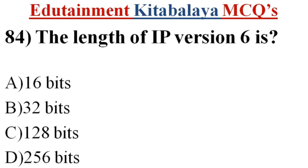Question number 84. The length of IP version 6 is? A. 16 bits. B. 32 bits. C. 128 bits. D. 256 bits. Correct answer is C. 128 bits.